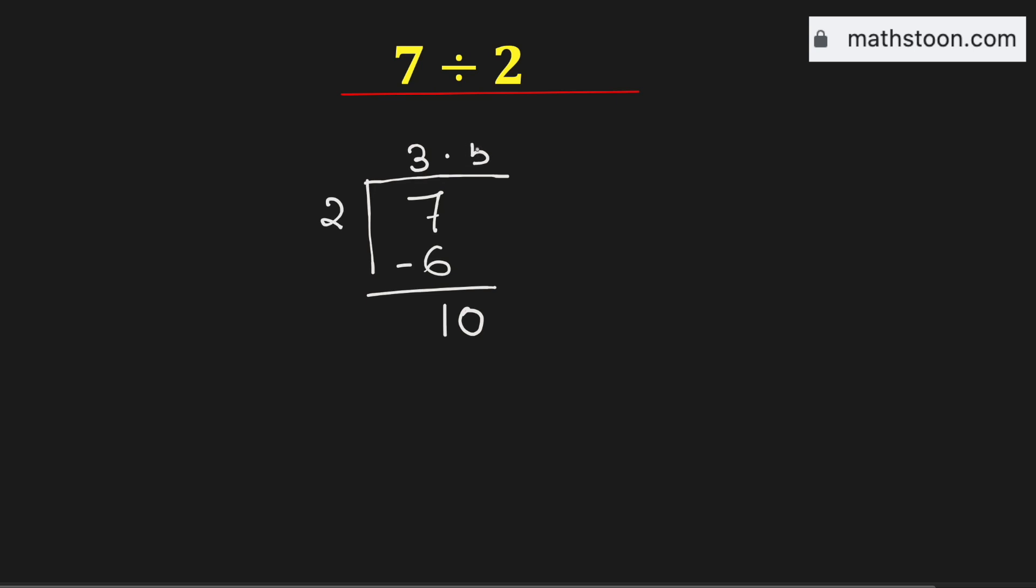Now we know that 2 times 5 is equal to 10. Now if we subtract we get nothing.